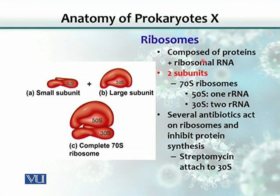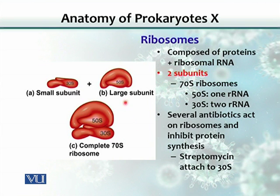Another component in the cytoplasm of prokaryotes is ribosomes. Ribosomes are made up of proteins and RNA — the RNA in ribosomes is called ribosomal RNA. Ribosomes consist of two subunits: a small subunit and a large subunit. When these two combine, they make a complete ribosome. The small subunit is labeled 30S and the large subunit is 50S. The 'S' is a unit of measurement called Svedberg, named after the scientist who invented the centrifugation technique.